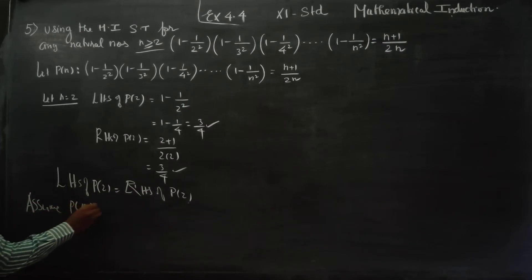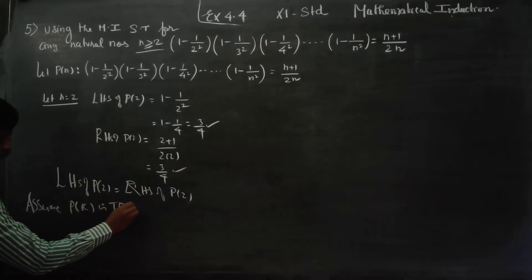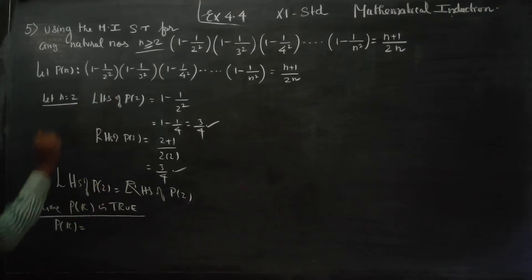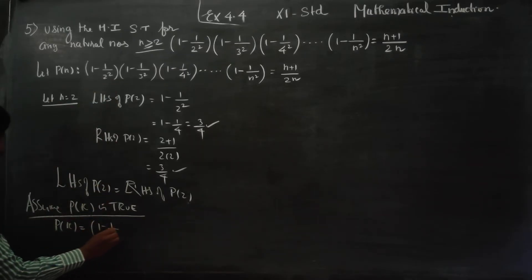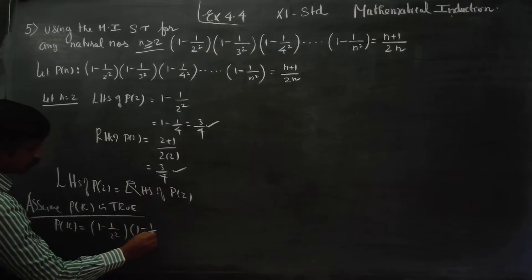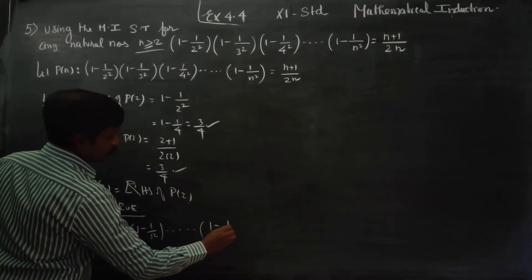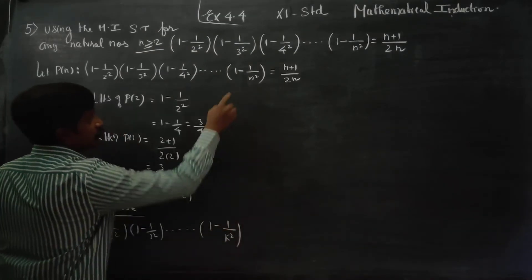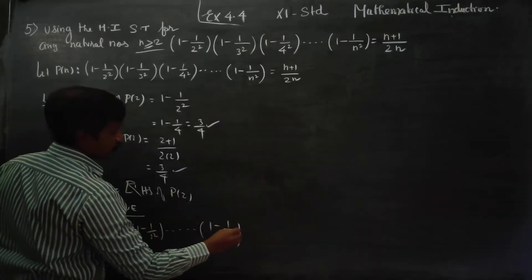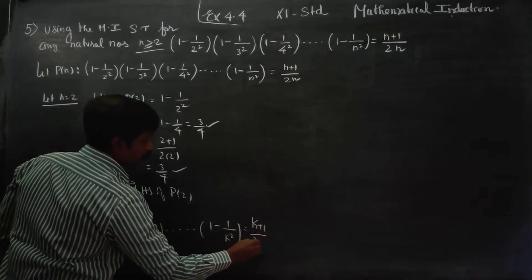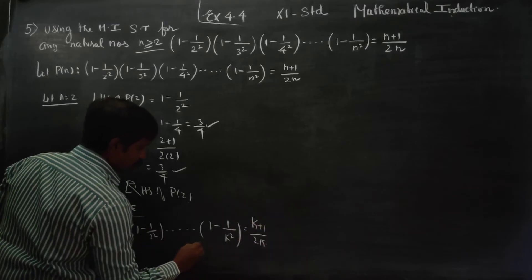Assume P of k is true. What is P of k? Substituting k: 1 minus 1 by 2 square, 1 minus 1 by 3 square, dot dot dot, 1 minus 1 by k square is equal to k plus 1 by 2k. This is assumed to be true.